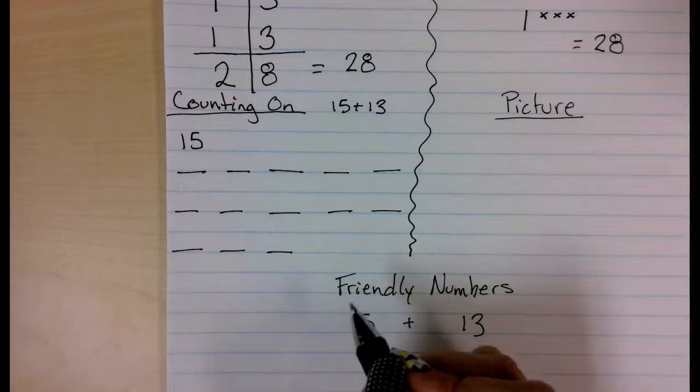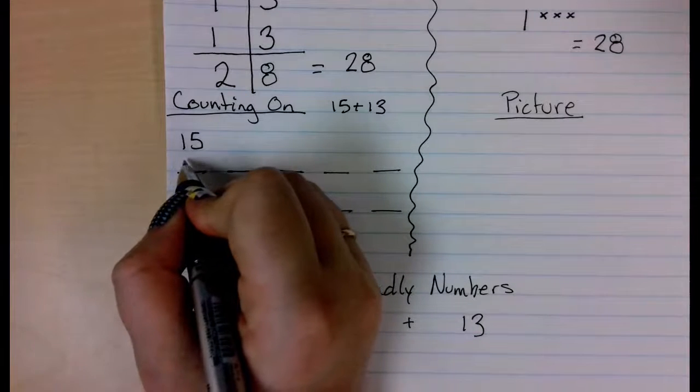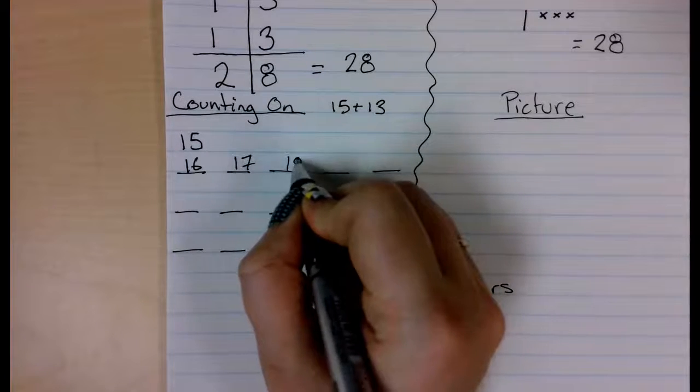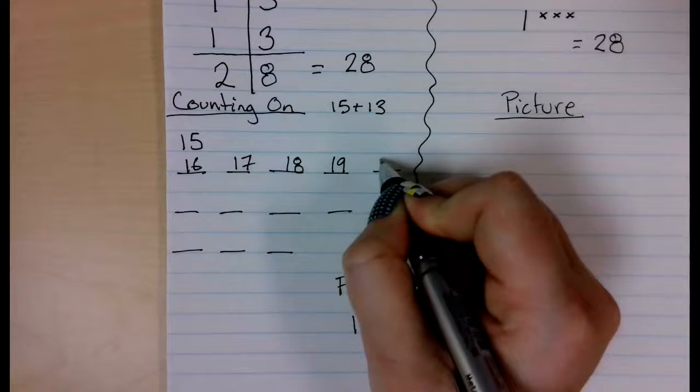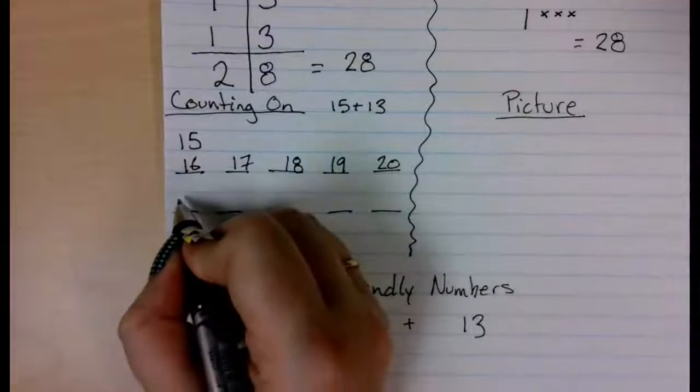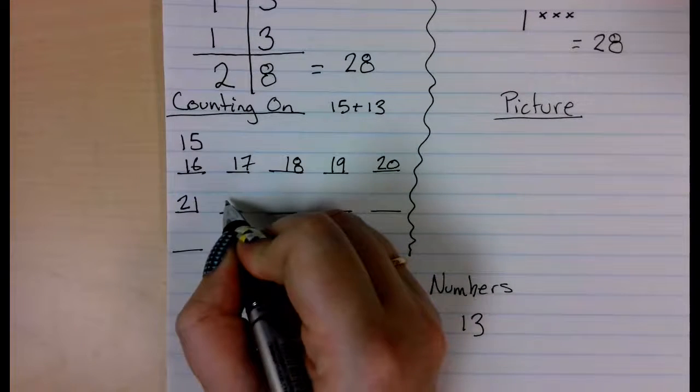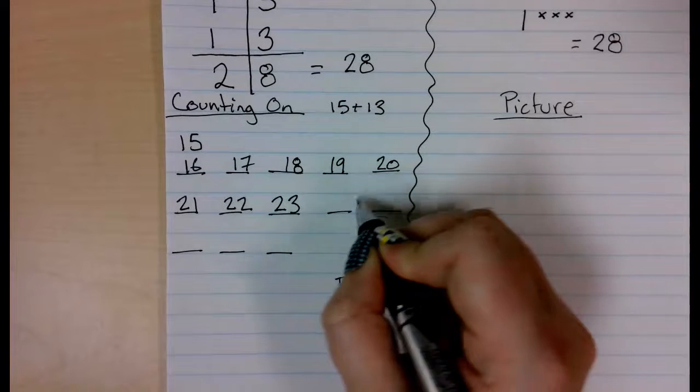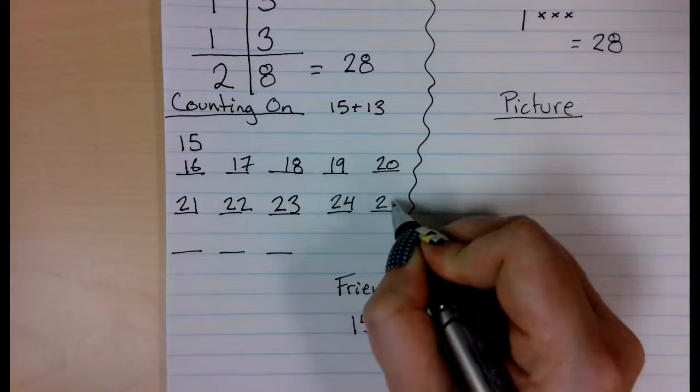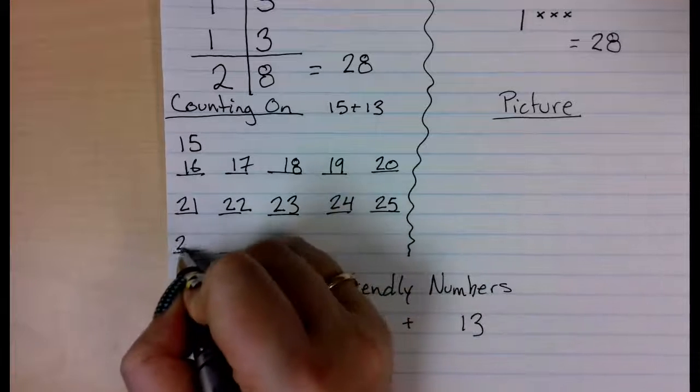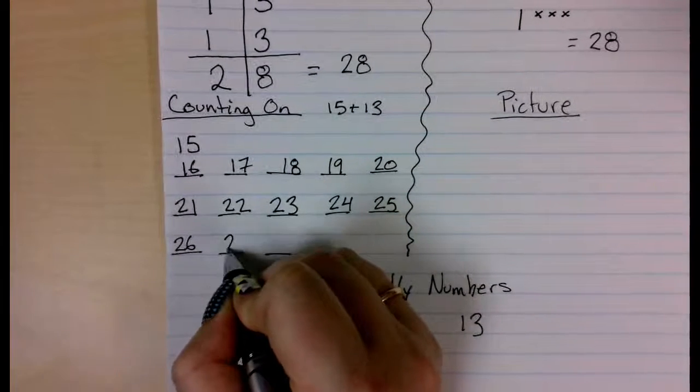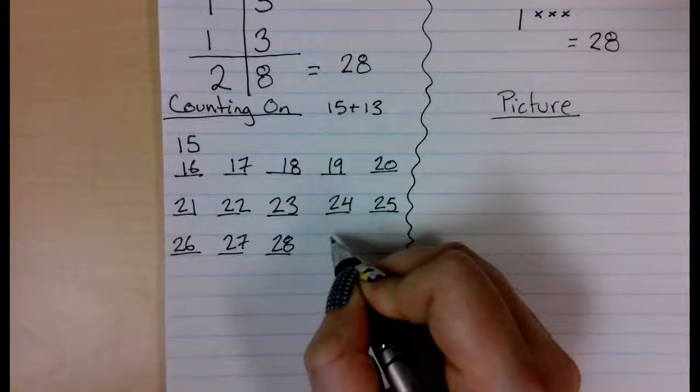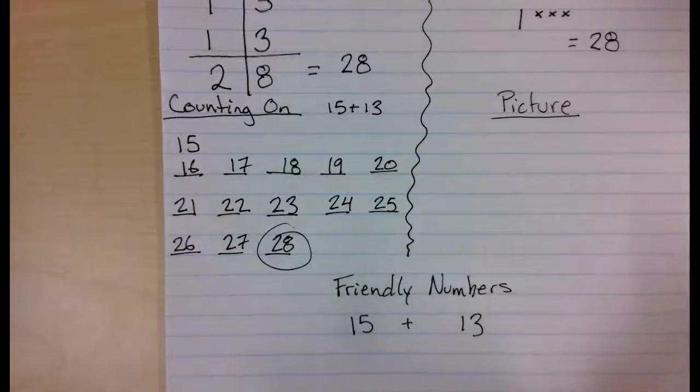So 15, and then I am going to fill up the spaces. I am going to count on 16, 17, 18, 19, 20, 21, 22, 23, 24, 25, 26, 27, 28, and that's my final number. 28.